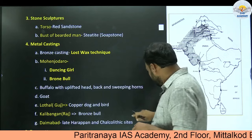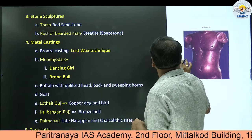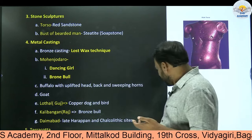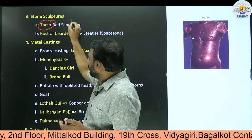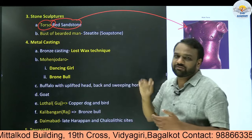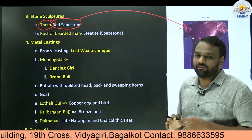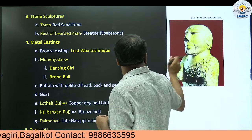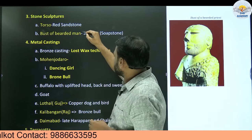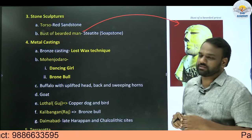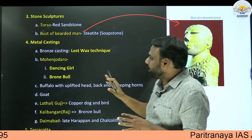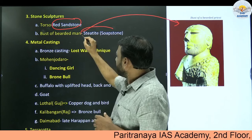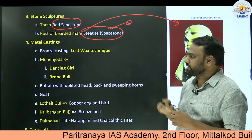Next, stone sculptures. If you look at the Indus Valley civilization, we come across various sculptures. Here we have a torso made up of red sandstone, which was found at an Indus Valley site. This indicates they were aware of and involved in sculpting. At some other site, we have got a bust of a bearded man, which also indicates they were aware of sculptures. An important point: the torso is made up of red sandstone, and the bust of the bearded man is made up of striated soapstone.